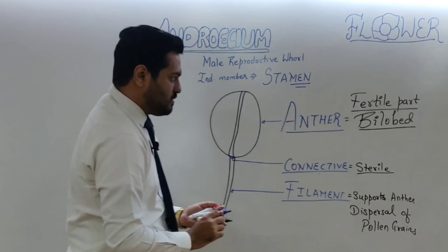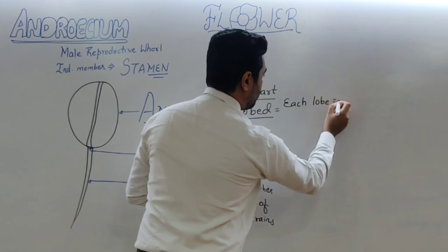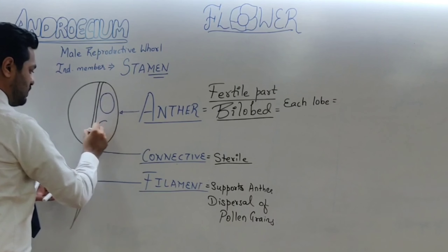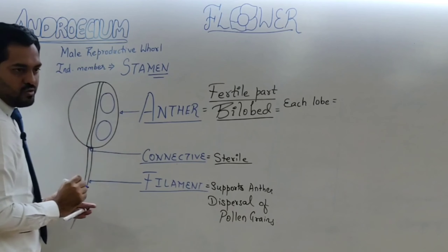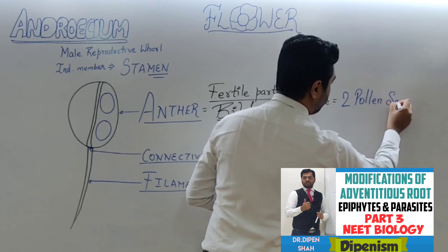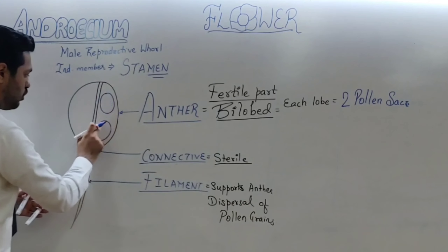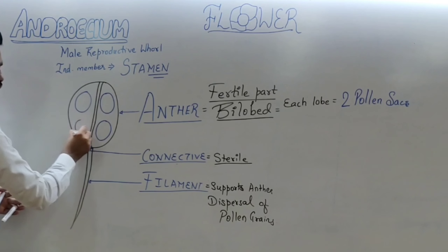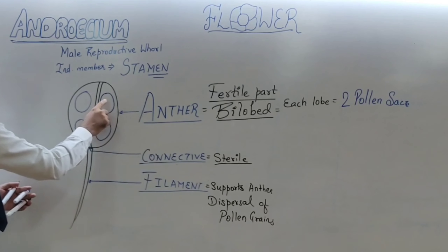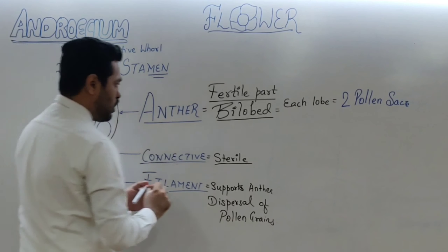Each lobe of the anther contains two important structures known as pollen sacs, also called pollen chambers. So each lobe has two pollen sacs. Since the anther is bilobed, the total number of pollen sacs in an anther is four — two per lobe, four overall.